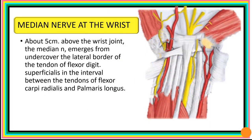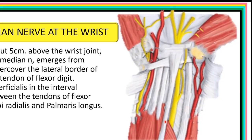Towards the wrist, about 5 cm proximal to the wrist, the median nerve emerges from the cover of the flexor digitorum superficialis. It will run lateral to the flexor digitorum superficialis and lie in the interval between the tendons of flexor carpi radialis on the lateral side and palmaris longus on the medial and superior part. Here is the tendon of palmaris longus and the tendon of flexor carpi radialis, with the median nerve lodged between these tendons.